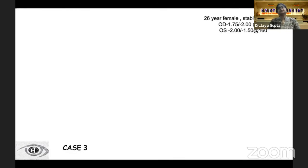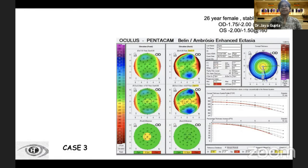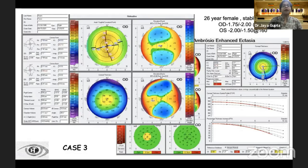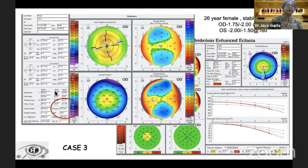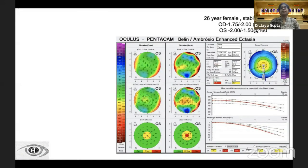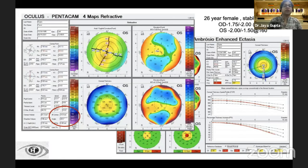Case 3: a 26-year-old female with a stable Pentacam and stable refraction of minus 1.75 with minus 2 in the right eye and minus 2 with minus 1.5 in the left eye. The Belin-Ambrósio display looks similar, but on the quadmap, notice the corneal diameter value of 10.9 — this is a small cornea. In a small cornea, because of greater corneal volume, some values come up flagged. We must analyze the maps in totality, keeping all factors in mind. The left eye similarly shows a diameter of 10.8.